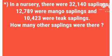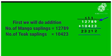So first we are going to do Addition, and then Subtraction. Now we will do the Addition: 12,789 plus 10,423. Starting with the units: 9 plus 3 is 12, write 2 carry 1. 8 plus 1 is 9, 9 plus 2 is 11, write 1 carry 1. 7 plus 1 is 8, 8 plus 4 is 12, write 2 carry 1. 1 plus 2 is 3, 3 plus 0 is 3. And last, 1 plus 1 is 2. So your answer is 23,212.